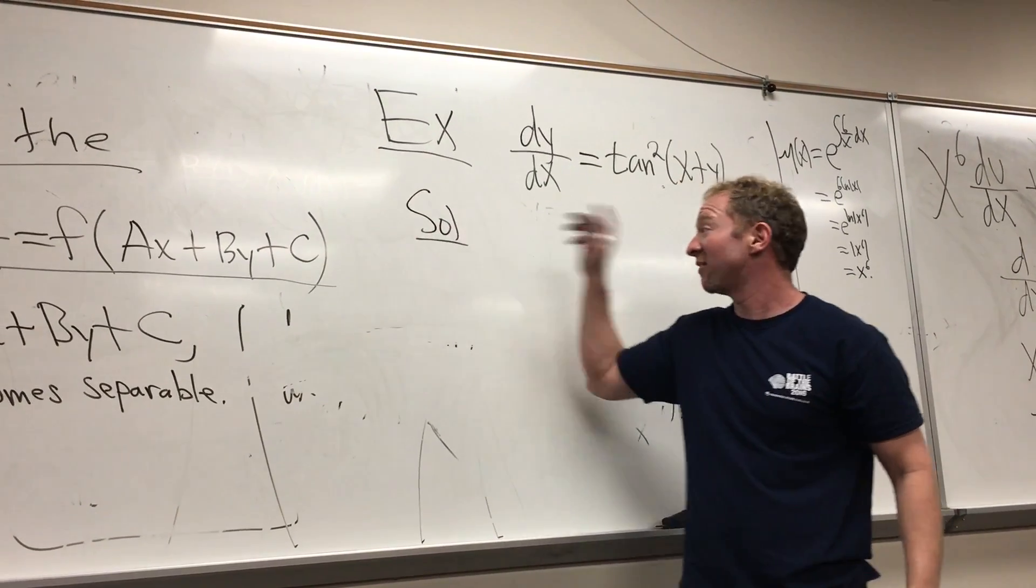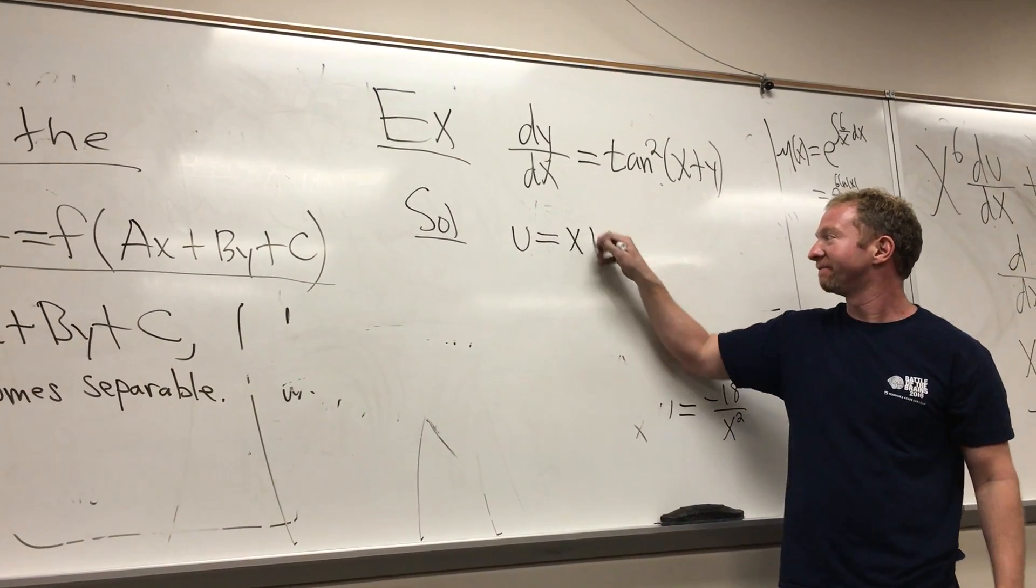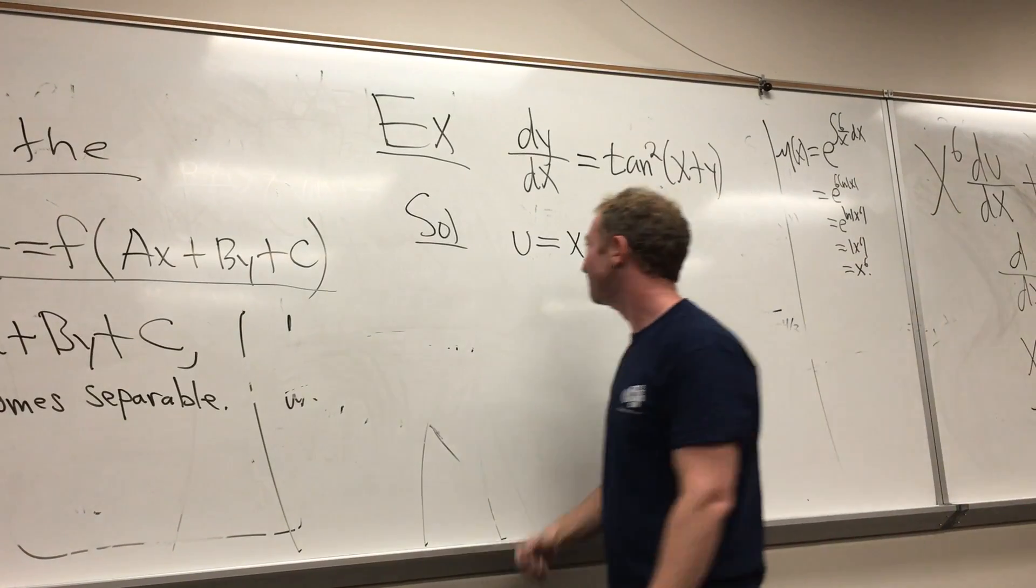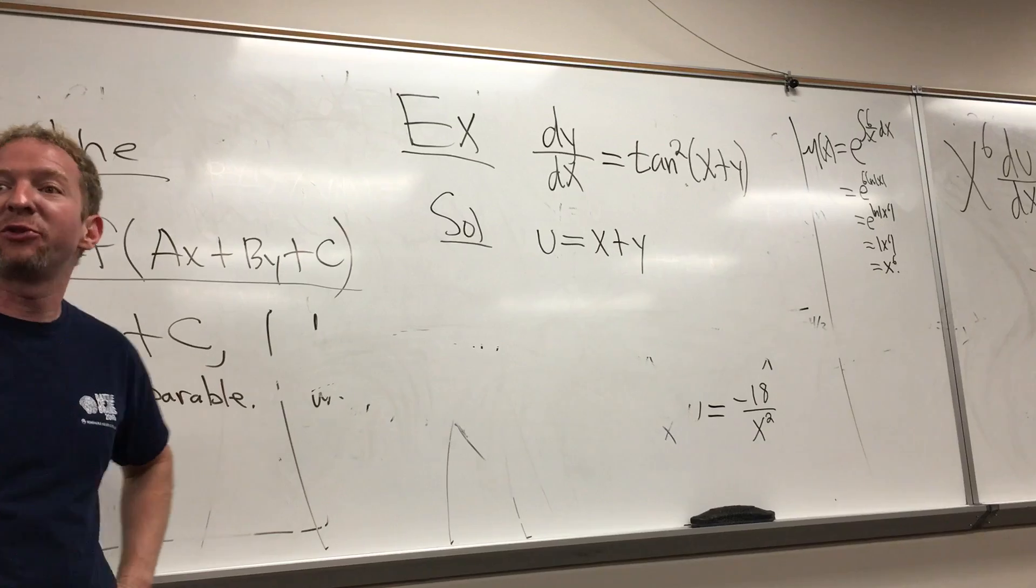I haven't done this in a long time, in a year. I haven't done one of these since last year, so it should be interesting. I haven't even looked at my notes. U equals x plus y. I know, it's scary. Alright, and then I guess we have to compute the derivative with respect to x, right?